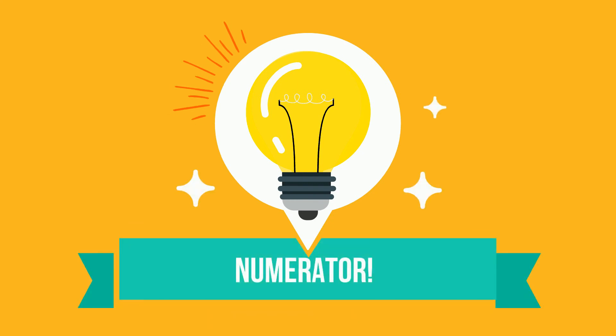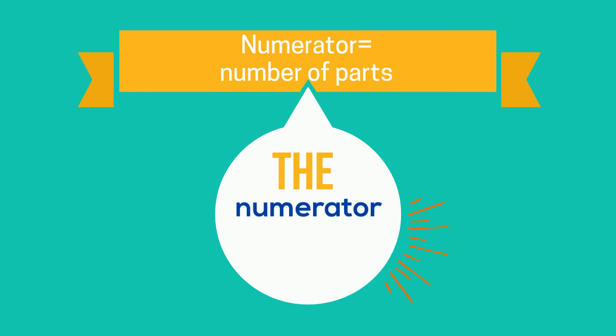Three is the numerator of the fraction. The numerator tells us the parts that we're looking at. The numerator goes on the top of the fraction.